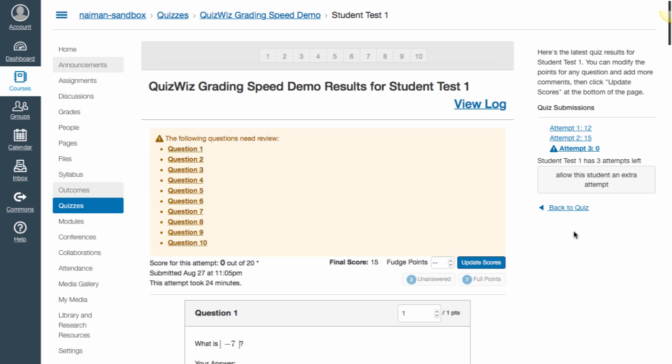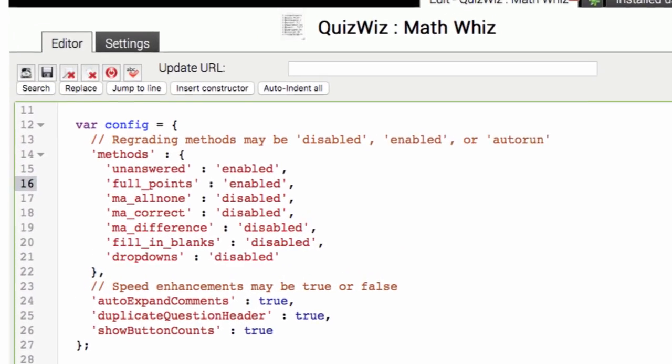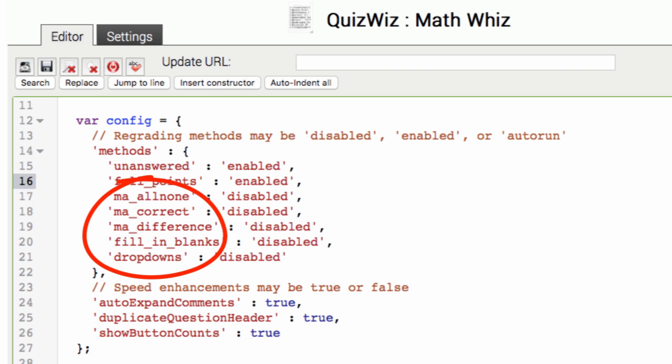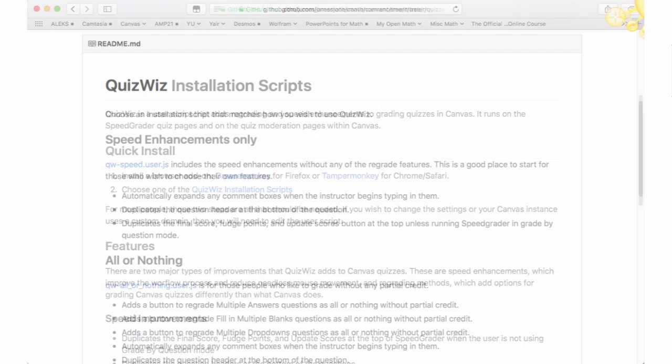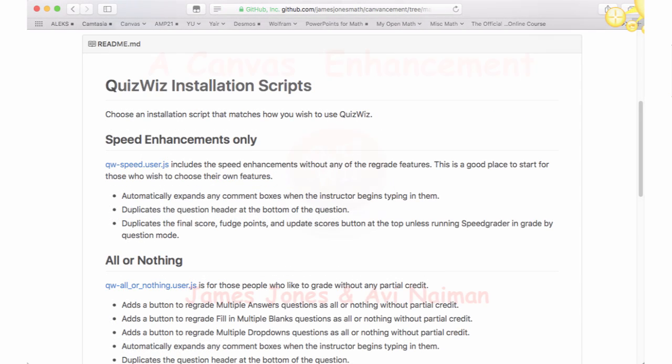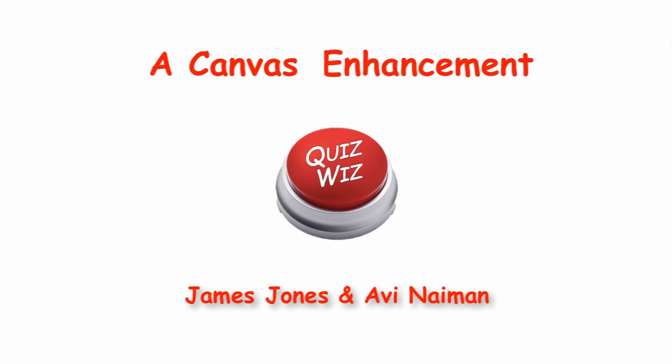This quiz now requires only 5 clicks to grade manually. When using QuizWiz to grade 6 math quizzes, each taken by 50 students, we have experienced a 75% reduction in grading time. QuizWiz also offers alternative grading schemes for multi-part quiz questions. Please see the QuizWiz documentation for details, and stay tuned for more Canvancements.